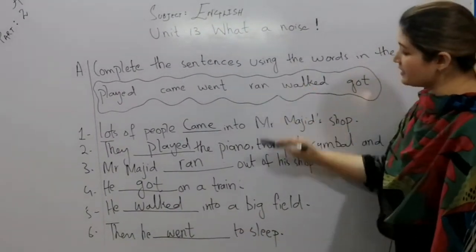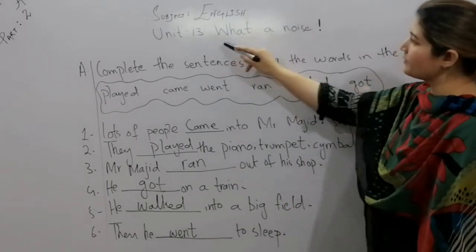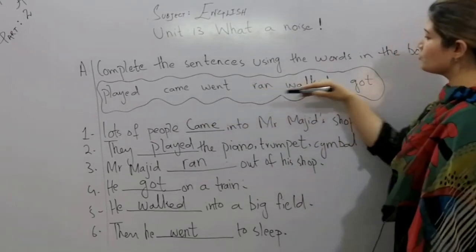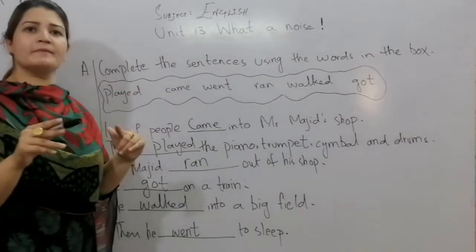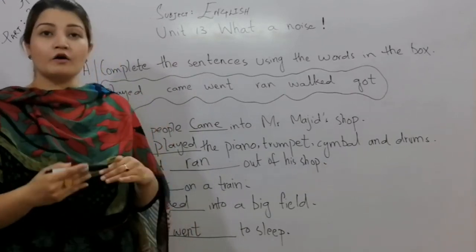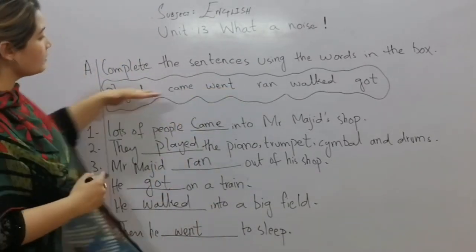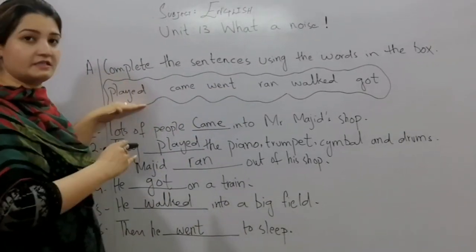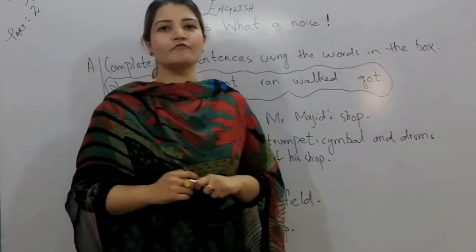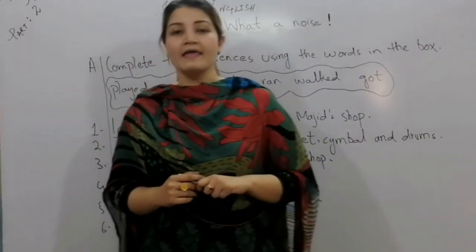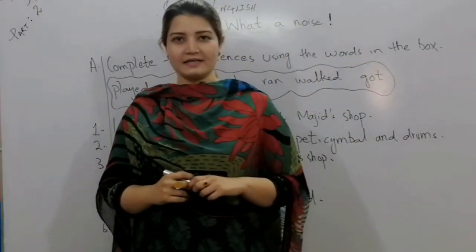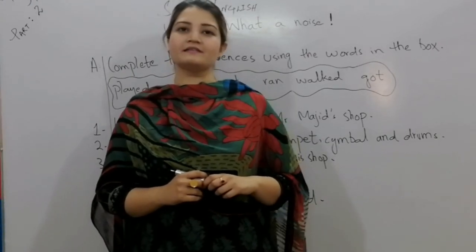So my dear students, all these sentences were related to unit number 13, 'What a Noise'. In these sentences, we used the verbs played, came, went, ran, walked, and got — all past tense verbs. Any action is called a verb, for example: playing, jumping, laughing, walking, eating, running. That was all from today's lesson. We studied the usage of 'was' and 'were', and completed one exercise from unit 13. I hope you enjoyed the lesson. I'll catch you next week, inshallah, with another lesson. Till then, take care. Allah Hafiz, goodbye.